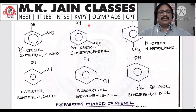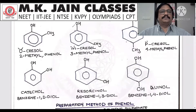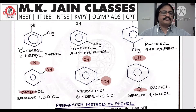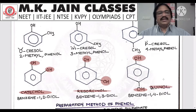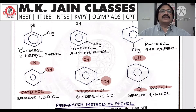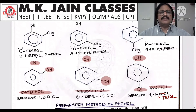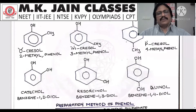If there are two OH groups — keep in mind, if two OH groups are present on the benzene ring — the names change at ortho, meta, and para positions. If at ortho, that is called catechol. If at meta, this is called resorcinol. And if at para, this is called quinol. The IUPAC names are benzene-1,2-diol, benzene-1,3-diol, and benzene-1,4-diol. Besides this, more compounds will come in the chapter.